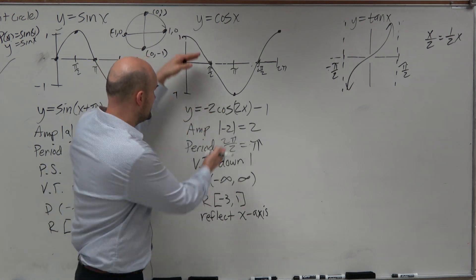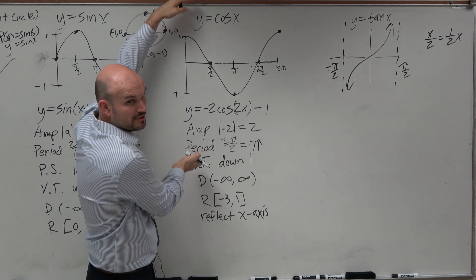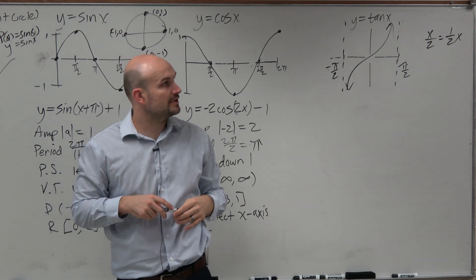Do you agree with the graph? Here's the negative 1 to 1. The 2 makes it go from negative 2 to positive 2. So if you shift the graph down 1, you're now at negative 3 to 1.